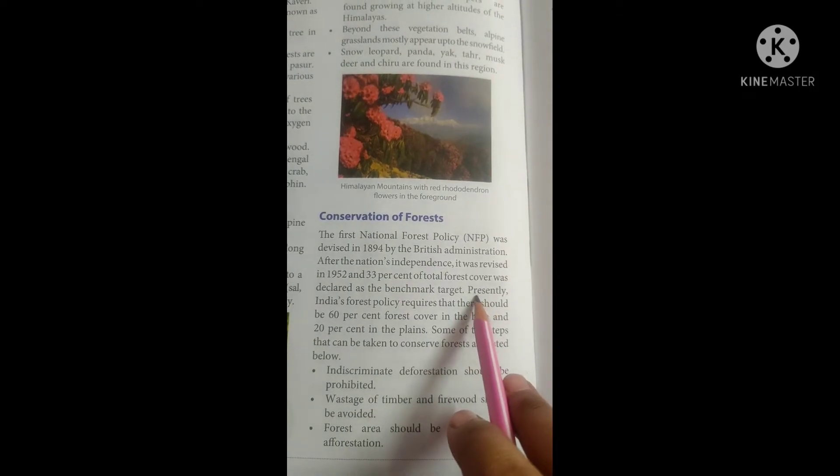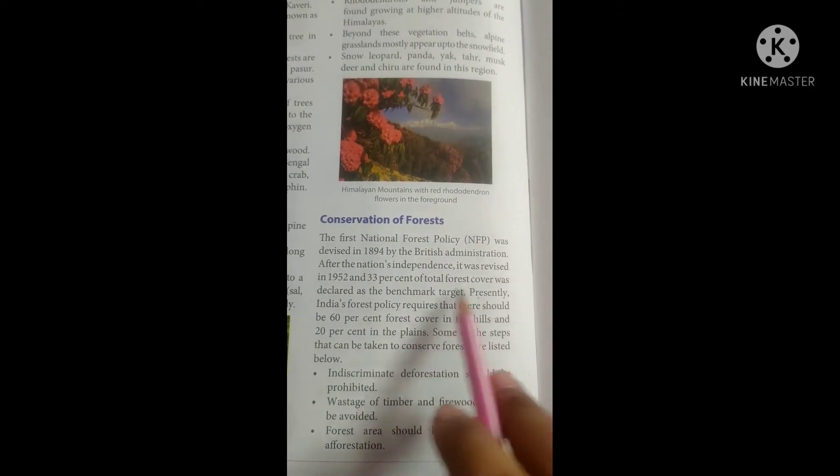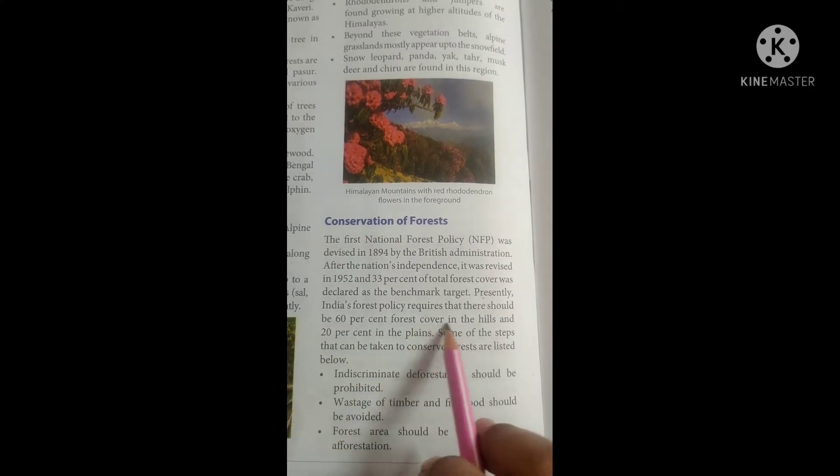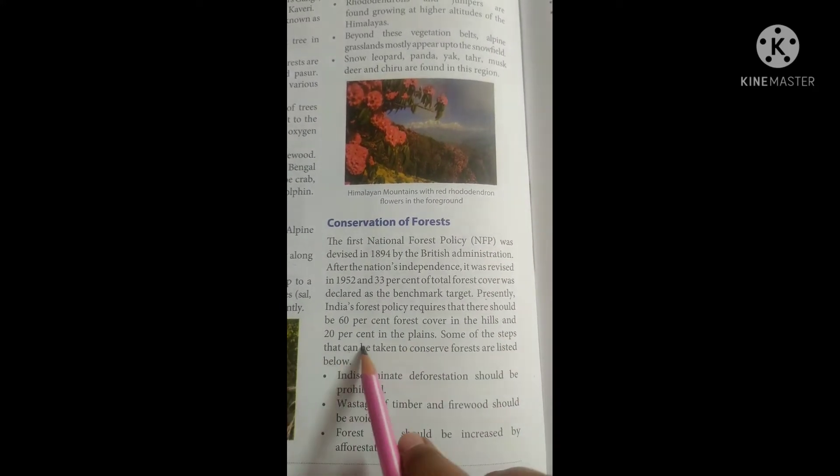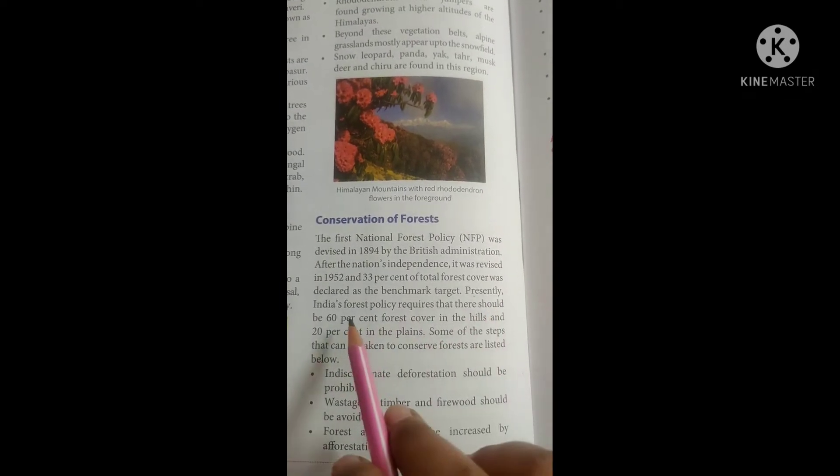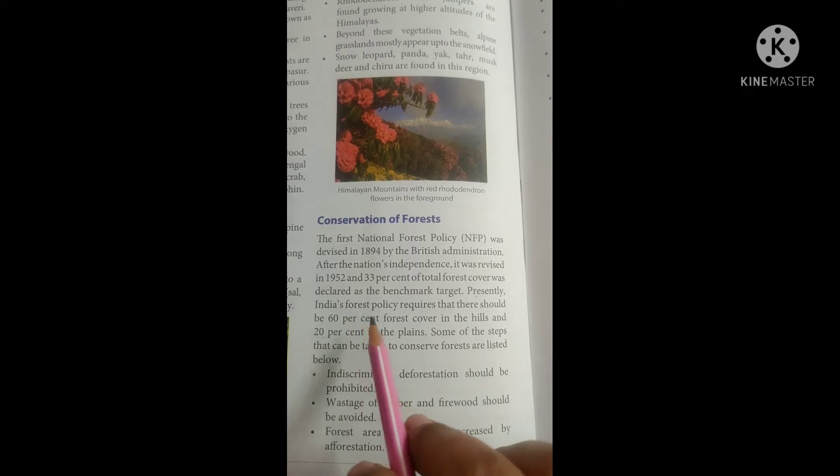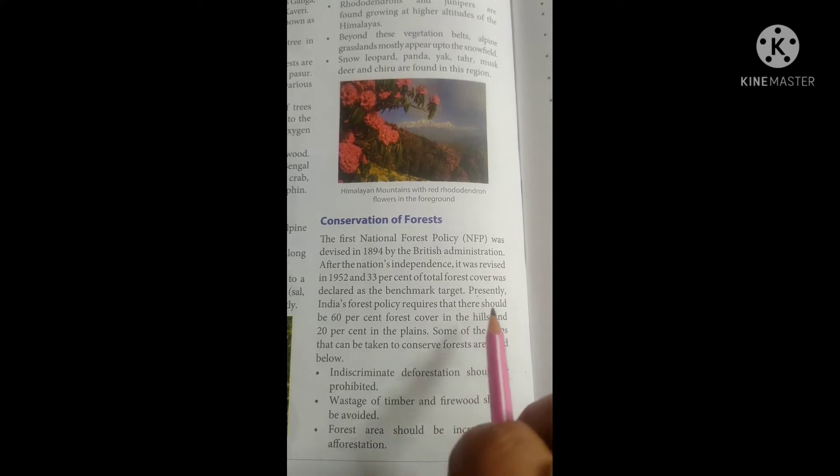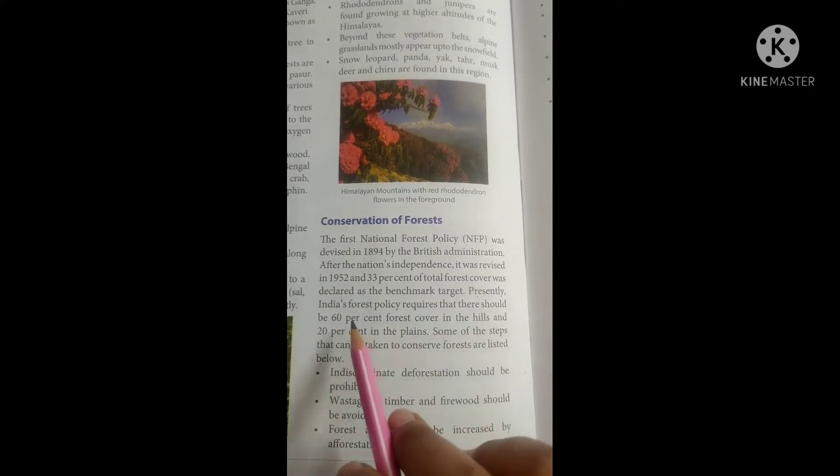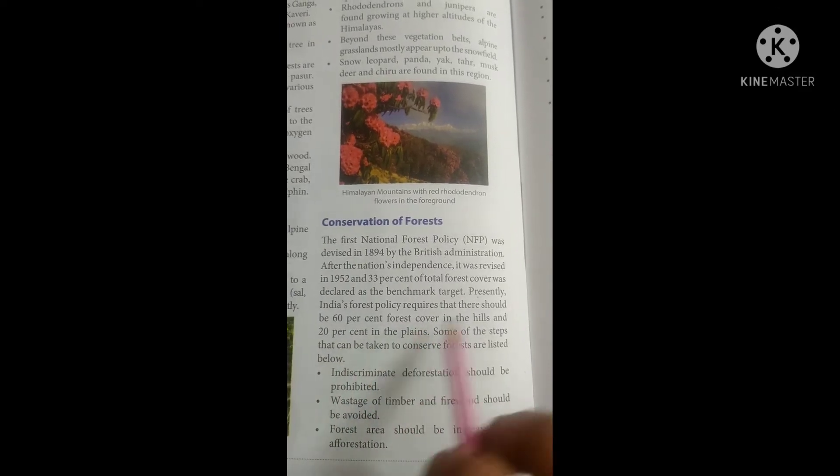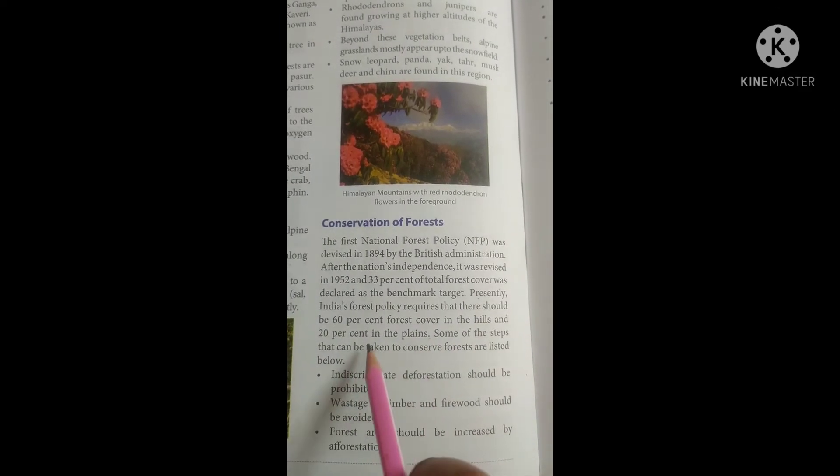Presently, India's Forest Policy requires that there should be 60% forest cover in the hills and 20% in the plains. If you look at India's Forest Policy, it requires 60% forest in the hills and 20% in the plains, meaning the northern plain area.